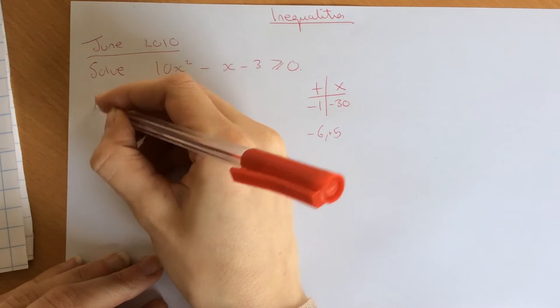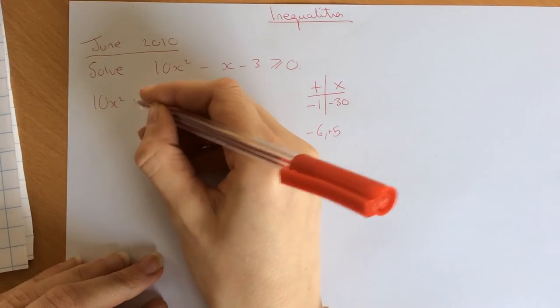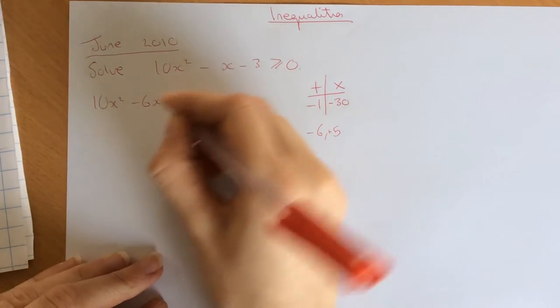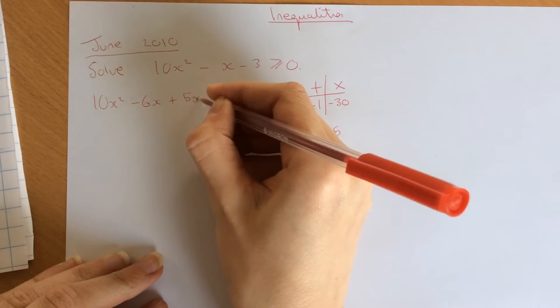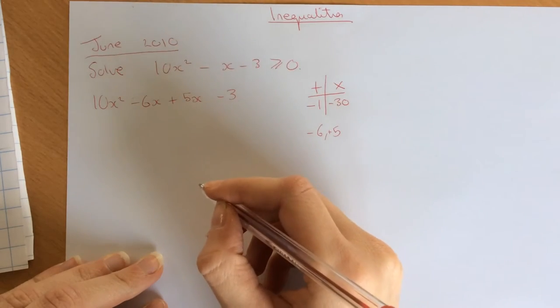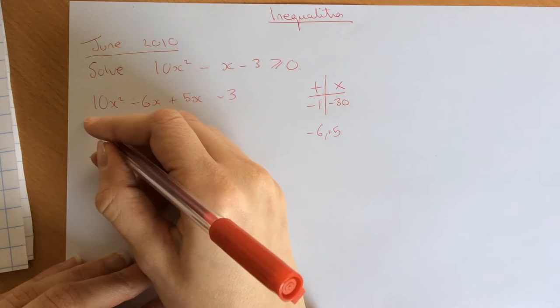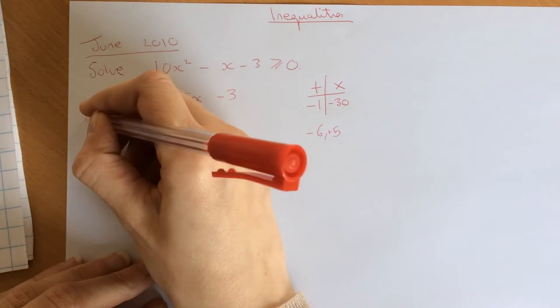Factorising then, we get 10x squared minus 6x plus 5x minus 3. Now factorise into two brackets, take out the 2x.